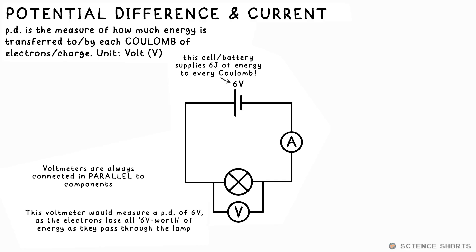Here's the equation for PD. PD in volts is equal to energy in joules divided by charge in coulombs. In symbol form, V equals E over Q. Q is the symbol for charge, but it's measured in C in coulombs.